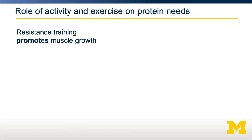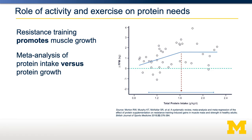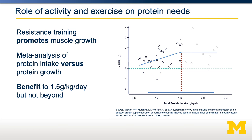Another aspect of protein is that the amount a person needs is quite dependent on their activity levels. Looking at one example involving resistance training: it's been quite strongly established that protein intake works alongside resistance training to promote muscle growth. In this meta-analysis, each dot represents a specific study measuring change in fat-free mass and total protein intake during the resistance training intervention. As protein intake increases up to about 1.6 grams per kilogram per day, there's a benefit for muscle mass accretion. However, beyond 1.6 grams per kilogram per day, there's no additional benefit.